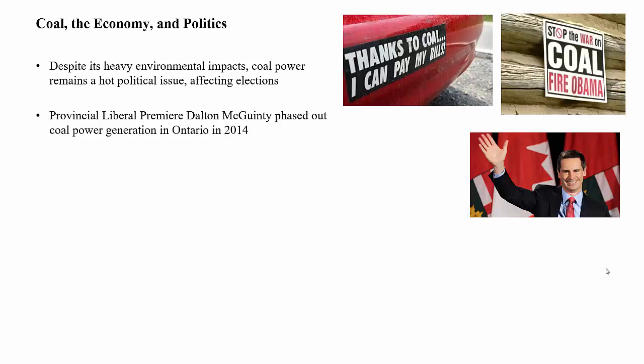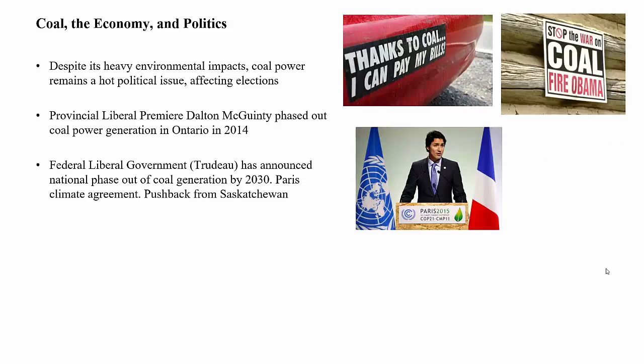What is perhaps an environmentally obvious choice can be politically very tricky to implement. In November 2016, Prime Minister Trudeau announced plans to phase out electricity generation from coal across Canada by 2030 — something the previous Harper government did not attempt, in spite of commitments under the Kyoto Protocol. Trudeau's move is mainly motivated by Canada's commitments under the 2016 Paris climate agreement, but phasing out coal also helps mitigate climate change, improves air quality, reduces occupational deaths of miners, and fights acid rain.